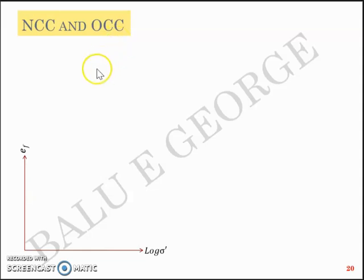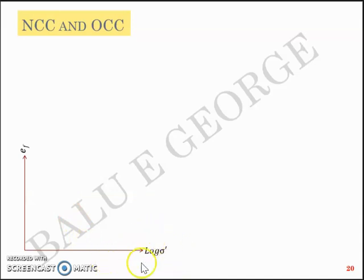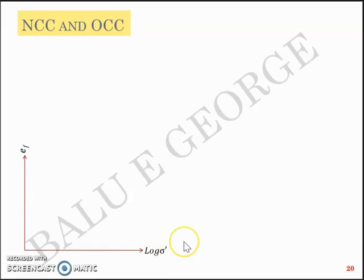In the previous video we discussed a few plots, one of them being the logarithm of sigma dash against e. The variation of e with log sigma dash was explained, the slope of which was CC, the compression index.